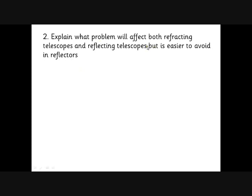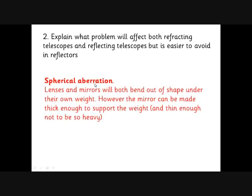The problem that will affect both refracting and reflecting telescopes, but it's easy to avoid in reflectors. Well, this is spherical aberration, because the lens will bend under its own weight, the mirror will also bend under its own weight, and you've got to keep it the right shape.